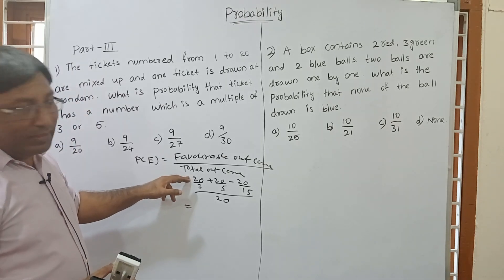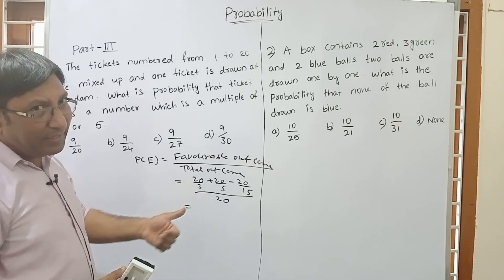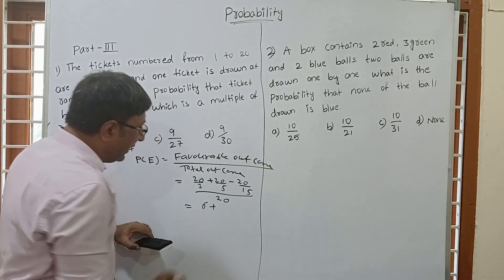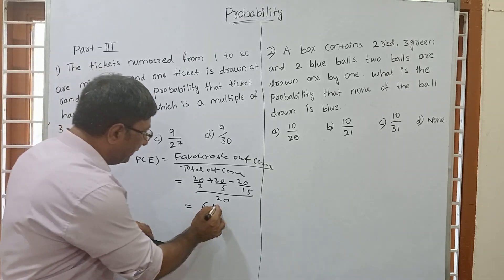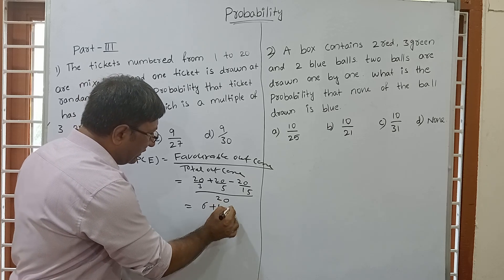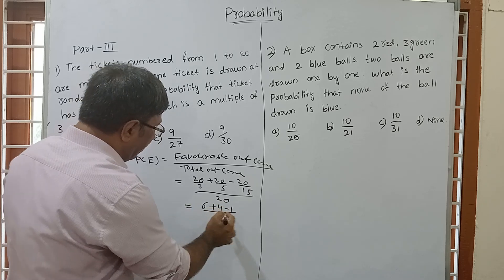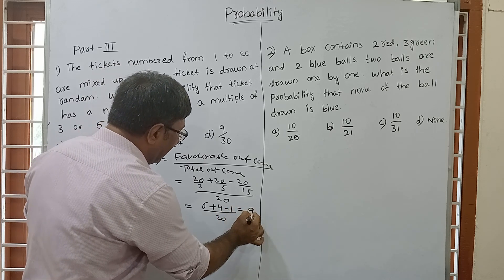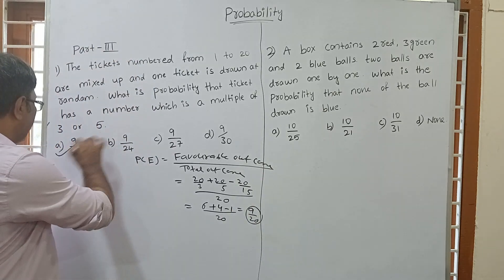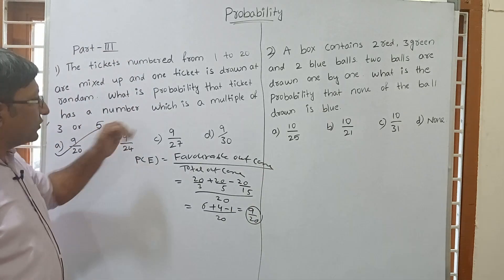20 divided by 3 gives 6 (we take only 6). 20 divided by 5 gives 4. Minus numbers divisible by 15: there is only 1 such number (which is 15 itself). So 6 plus 4 is 10, minus 1 is 9. Our answer is 9 by 20. The first option is 9 by 20.